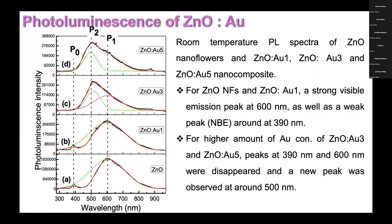The photoluminescence spectra show that we obtained two peaks: the NBE peak and the DLE peak. As the concentration of HCl is increased from 0 to 30 millimolar in the gold nanoparticles, the NBE peak disappears and the DLE peak is shifted from 600 to 500 nm. These emissions are obtained due to different defects, which can be zinc vacancies, oxygen vacancies, zinc interstitials, oxygen interstitials, and antisites of oxygen and zinc.